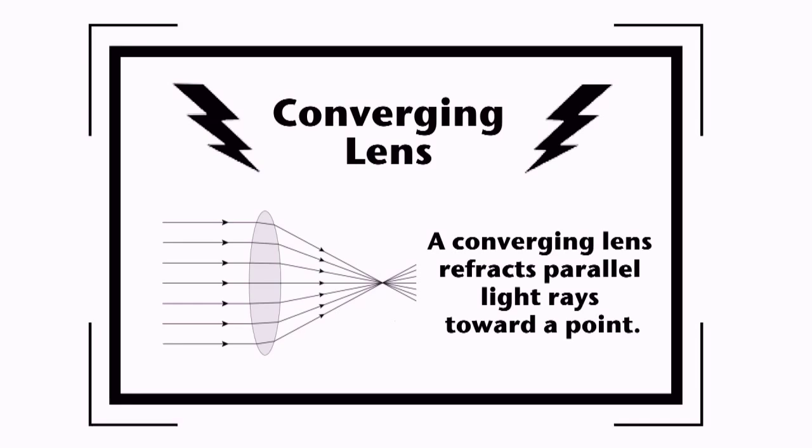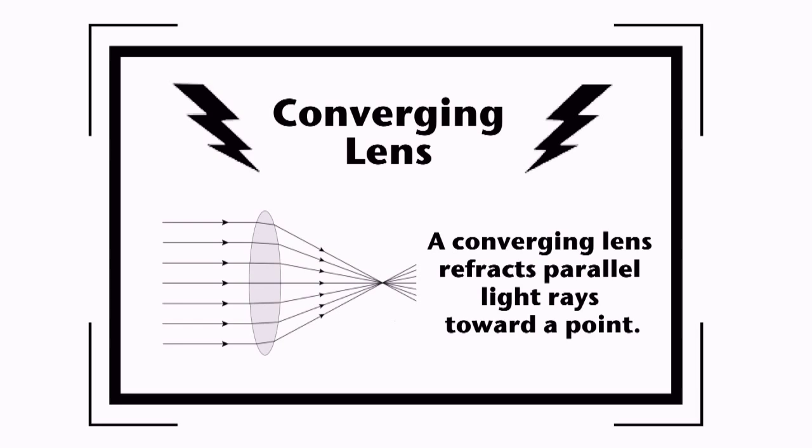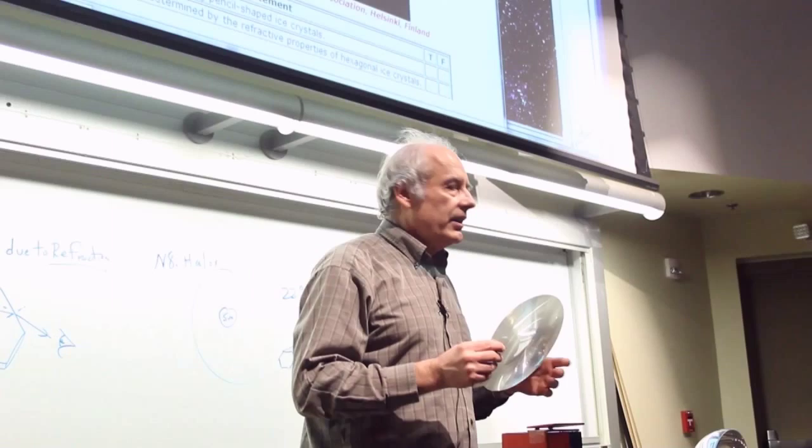A converging lens refracts parallel light rays towards a point. So what do you got there? Baby face or enlarged? What do you got there? Baby face. Diverging.